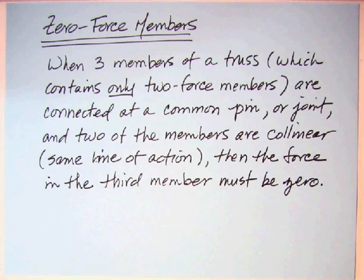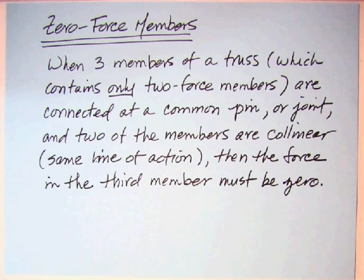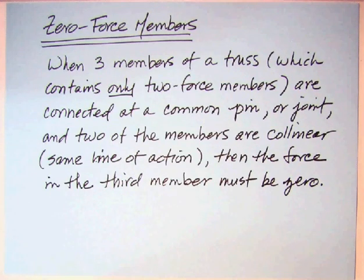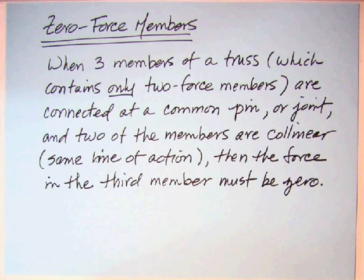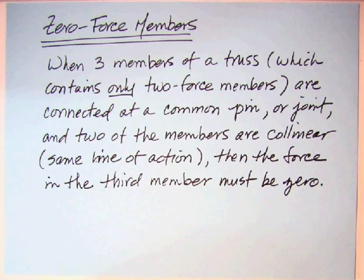You might find many different definitions for zero force members, but this one gives you the operational definition to solve problems. It says: when three members of a truss — which contains only two-force members in our ideal truss — are connected at a common pin or joint, and two of the members are collinear (the same line of action), then the force in the third member must be zero.